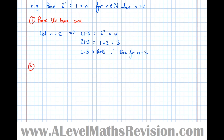Step two is the assumption step. Let n equal k and assume true, i.e., 2 to the k is greater than 1 plus k.